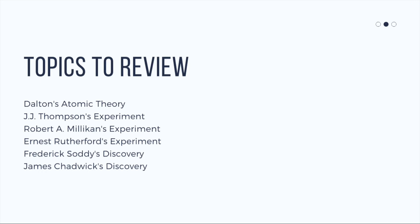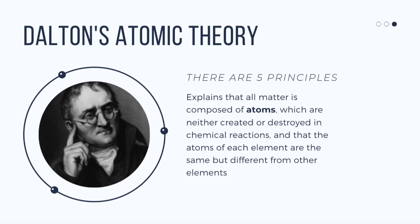Dalton's atomic theory is explained through five key principles or postulates, which explain that all matter is composed of atoms, which are neither created nor destroyed in chemical reactions, and that the atoms of each element are the same but different from other elements.